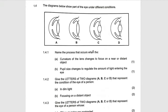Name the process that occurs when the curvature of the lens changes to focus a near or a distant object. We call that accommodation. So the answer is accommodation.